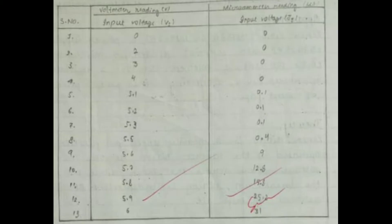This is the observation table, which consists of the voltmeter reading of input voltage and the microammeter reading. Both readings have been taken multiple times so that sources of error are minimized.